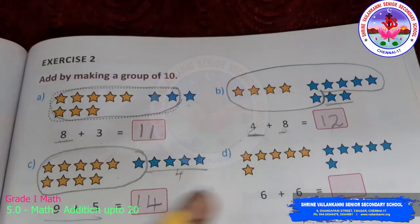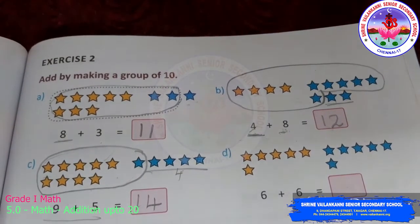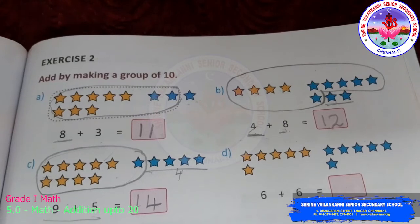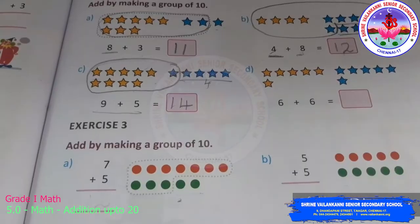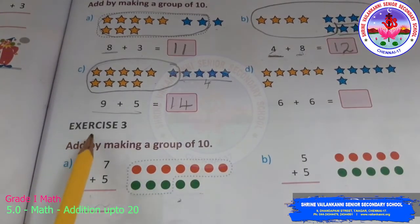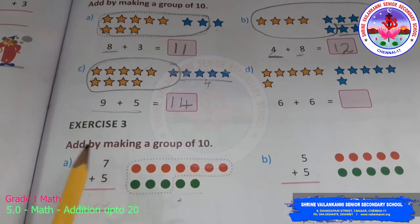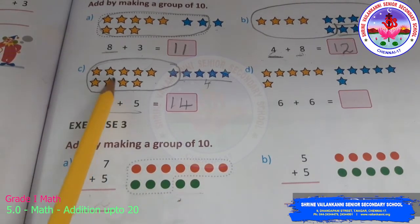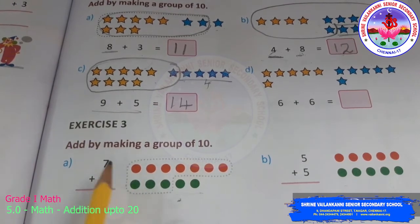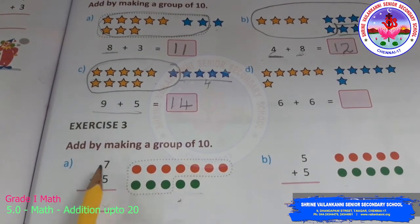You got it children? So, I want you to do this in your class work. Exercise 3 is the same thing. You are also going to make a group of 10. But, in the exercise 2, they have given you stars. Here, they have given you dots. But, you have to do the same procedure.